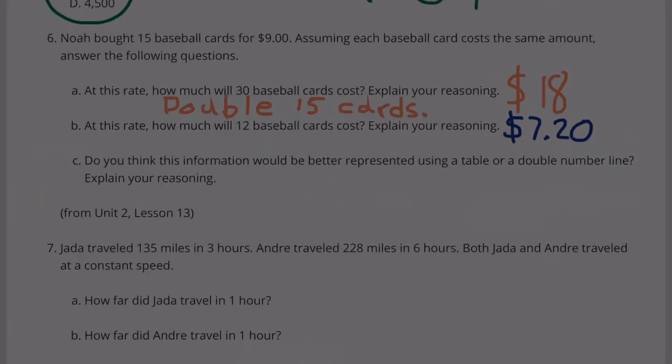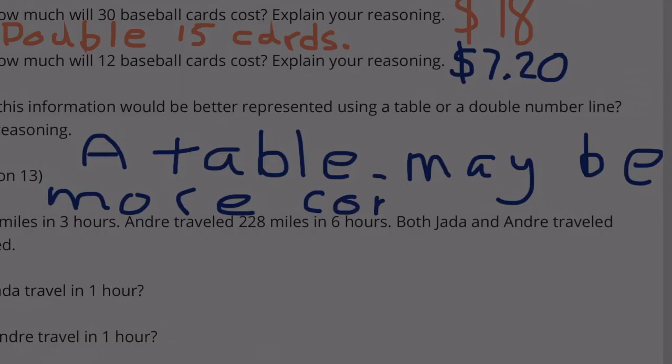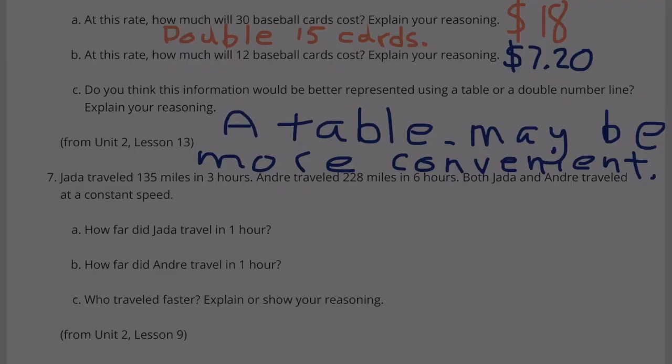Part C: Do you think this information would be better represented using a table or a double number line? Explain your reasoning. A table might be more convenient. There's more than one right answer. It's up to you, whichever you prefer.